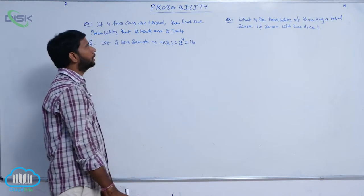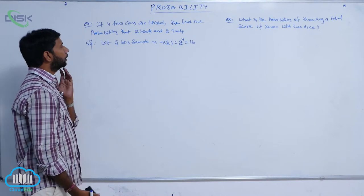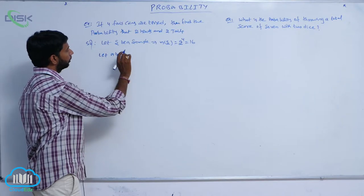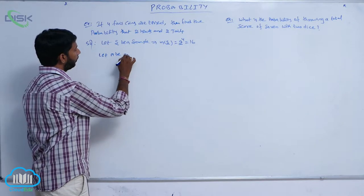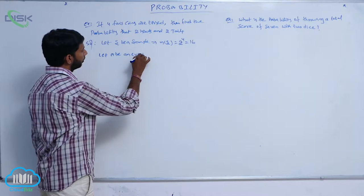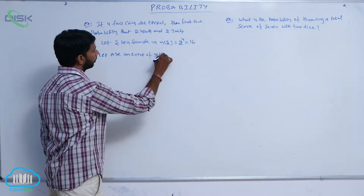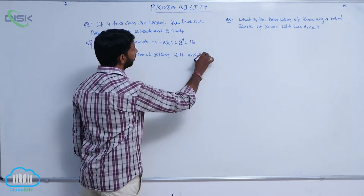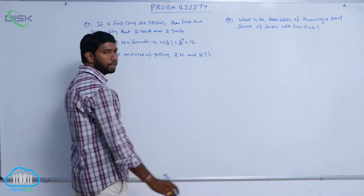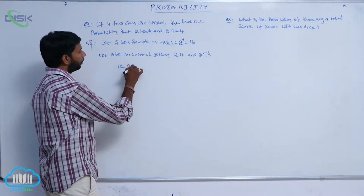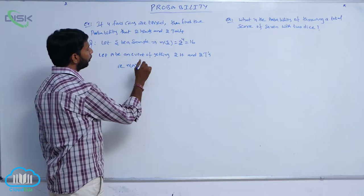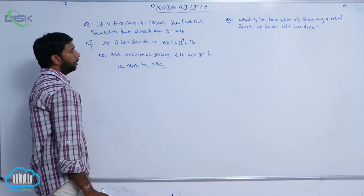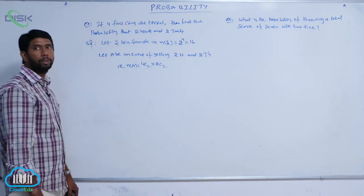Find the probability that two heads and two tails occur. Let A be an event of getting two heads and two tails. n(A) is equal to: out of four, two are selected in 4C2 ways and the remaining two in 2C2 ways. So n(A) is equal to 4C2 into 2C2.